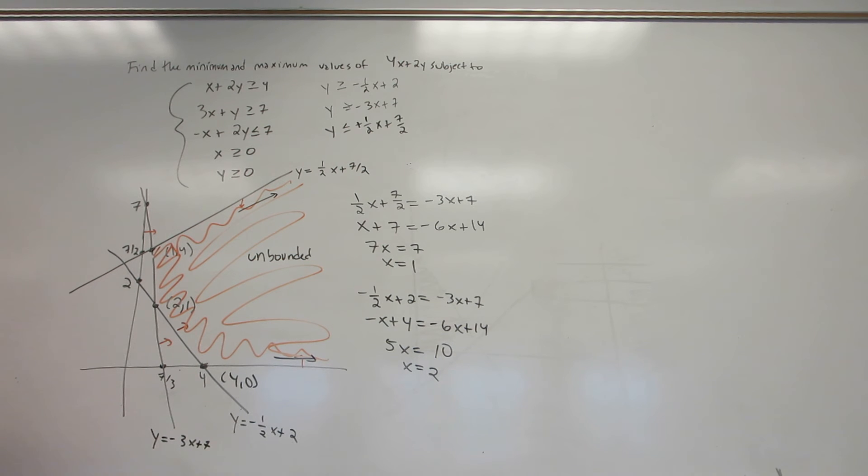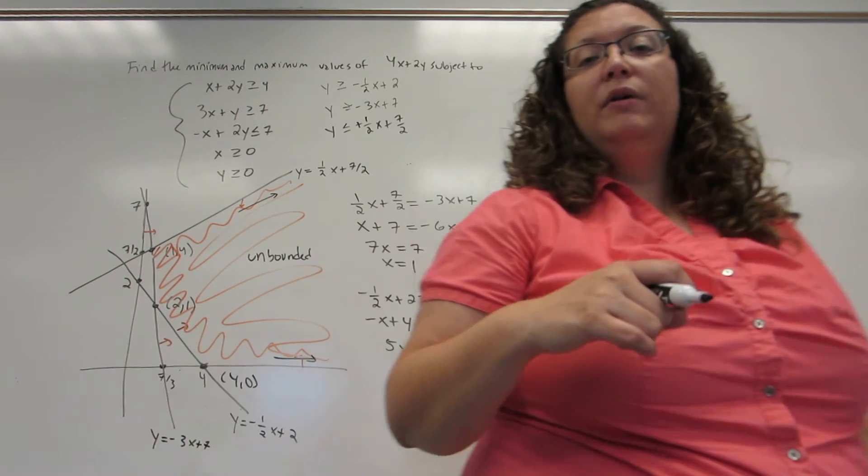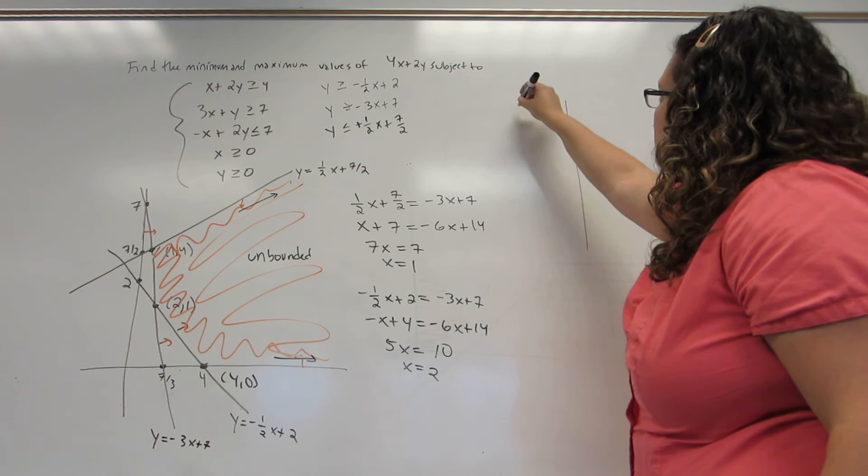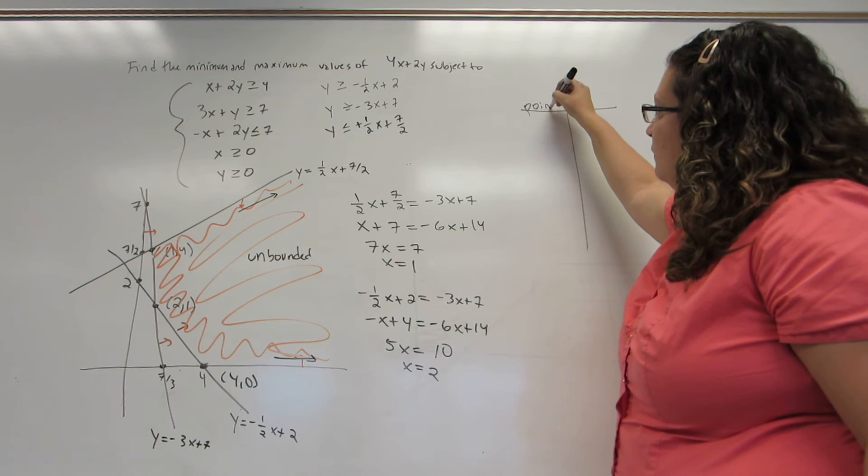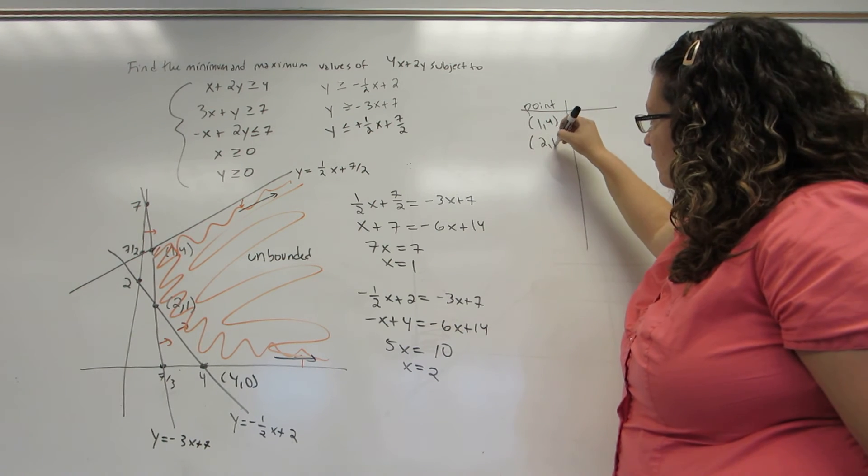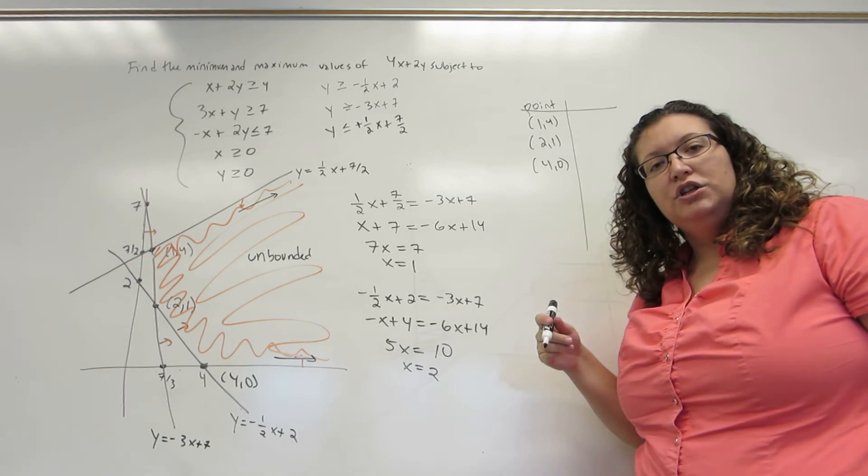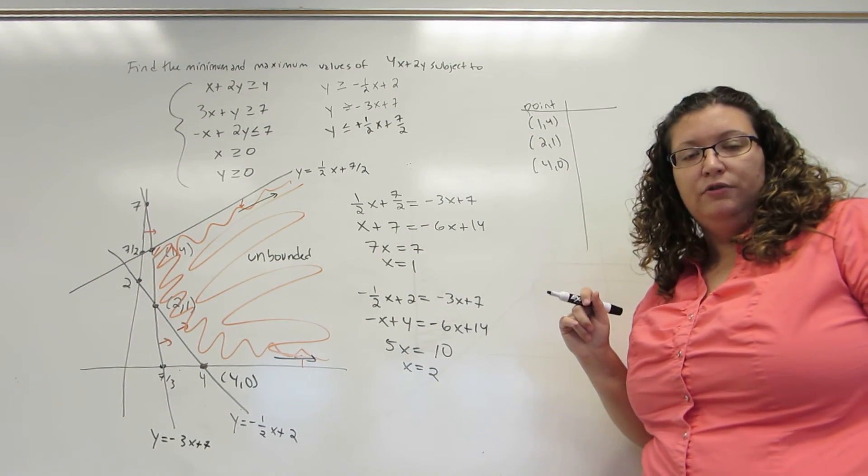So I have my three corner points or vertices, but I'm also going to need to take into account these boundaries. And that's a little bit harder to deal with. So starting by setting up my table, I'm going to put the three points I know, and I'm going to have two additional points that are, one each going to represent these boundaries.